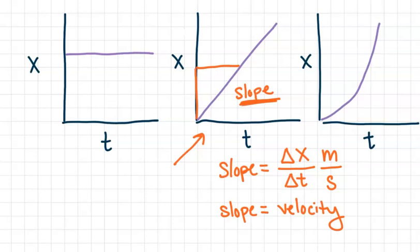If our graph instead looked something like this, we would still be able to get the magnitude of our velocity by taking the slope. But the negative associated with this line tells us that the velocity — our change in position — is going to be in the negative direction.